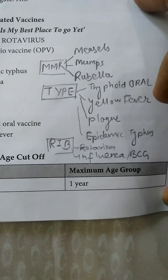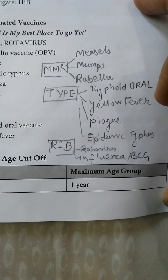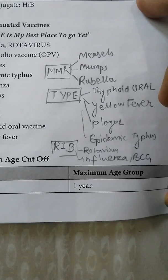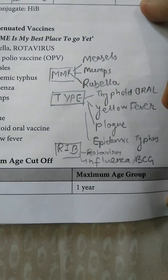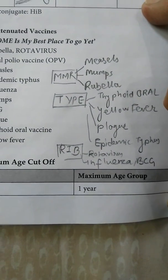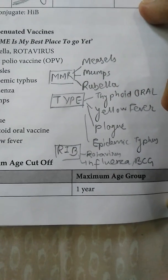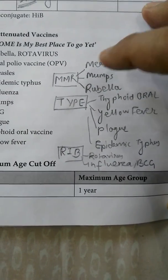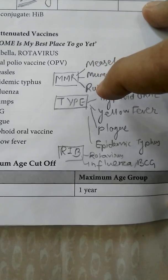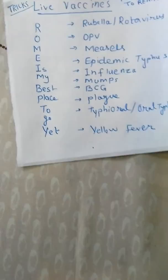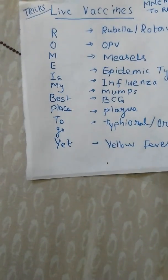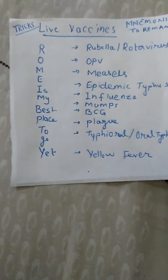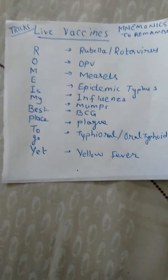RIB means R for Rotavirus, I for Influenza, and B for BCG. So you can use either 'MMR TYPE RIB' or 'Rome is my best place to go yet' to remember all the live vaccines.